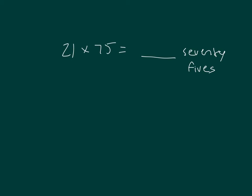Let's work through another problem. 21 times 75 equals blank 75s, equals 21 75s.